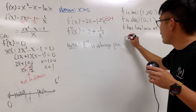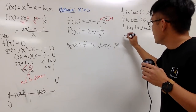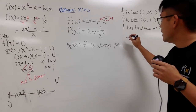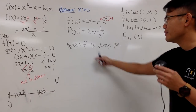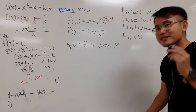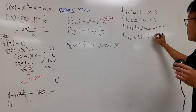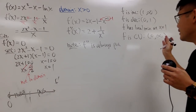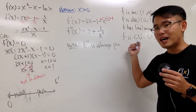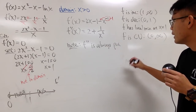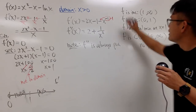Since f''(x) is always positive on the domain (0, ∞), the original function f is concave up the entire time — concave up on (0, ∞). f is never concave down on this domain, and because f is always concave up, there is no point of inflection.